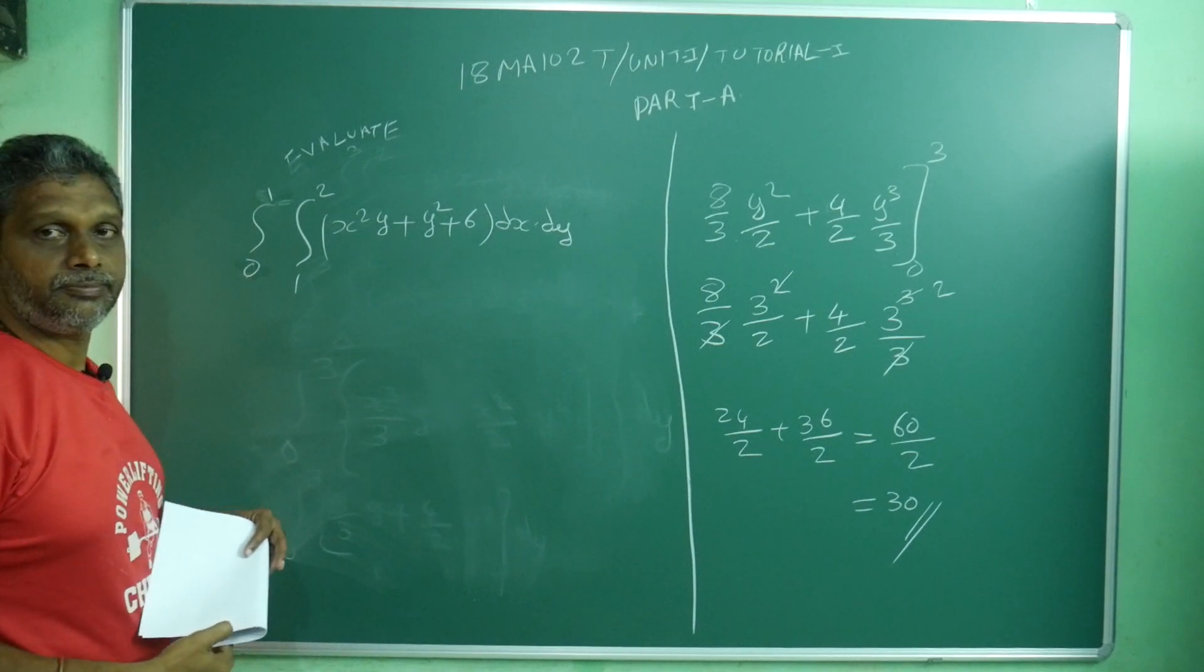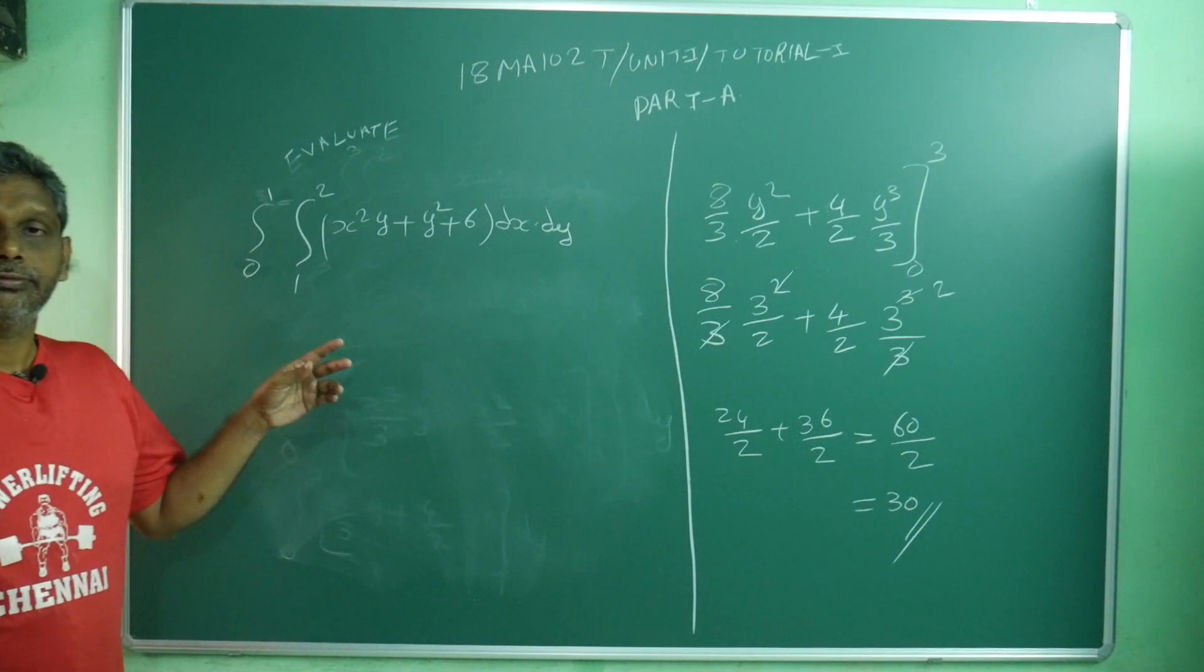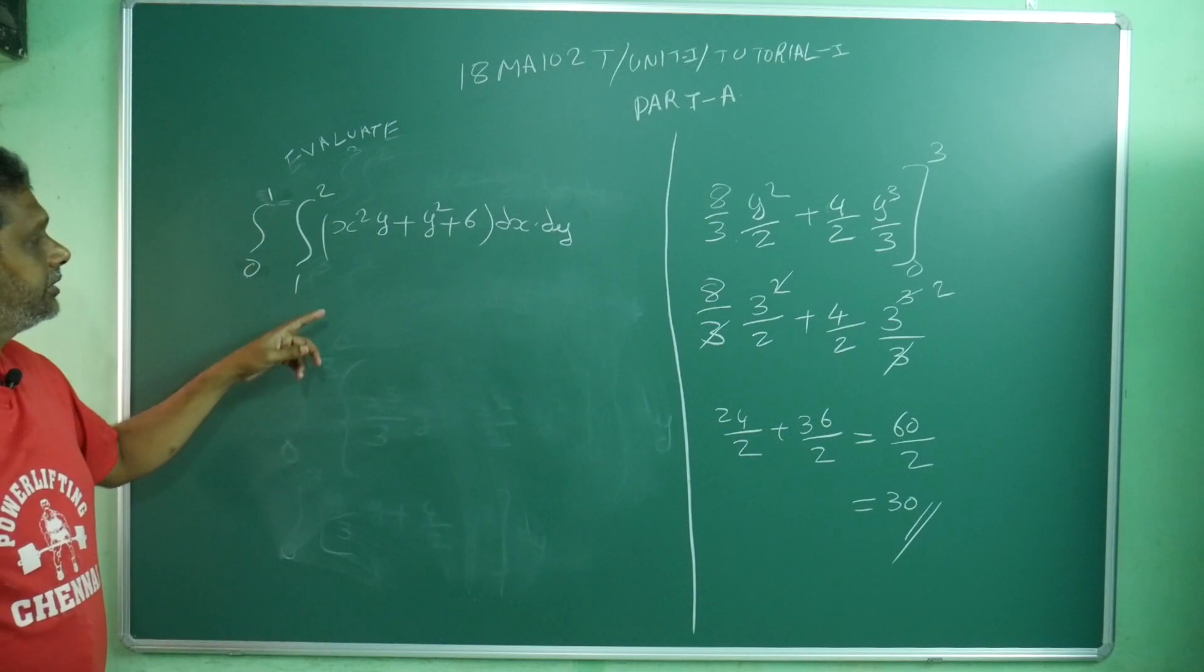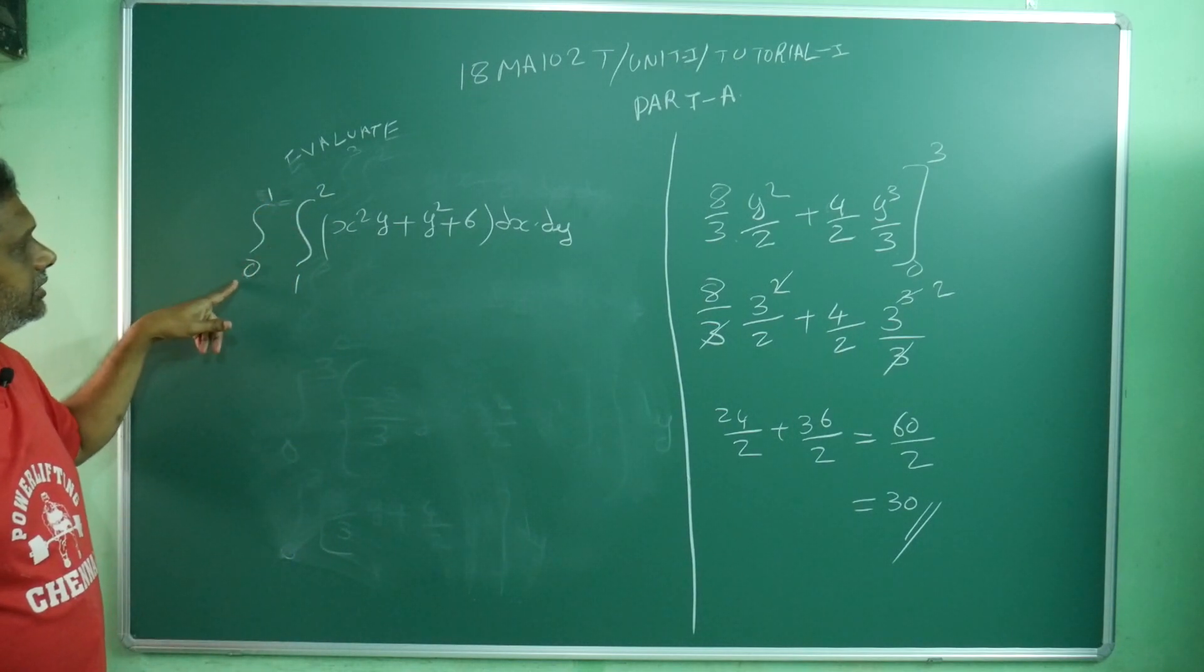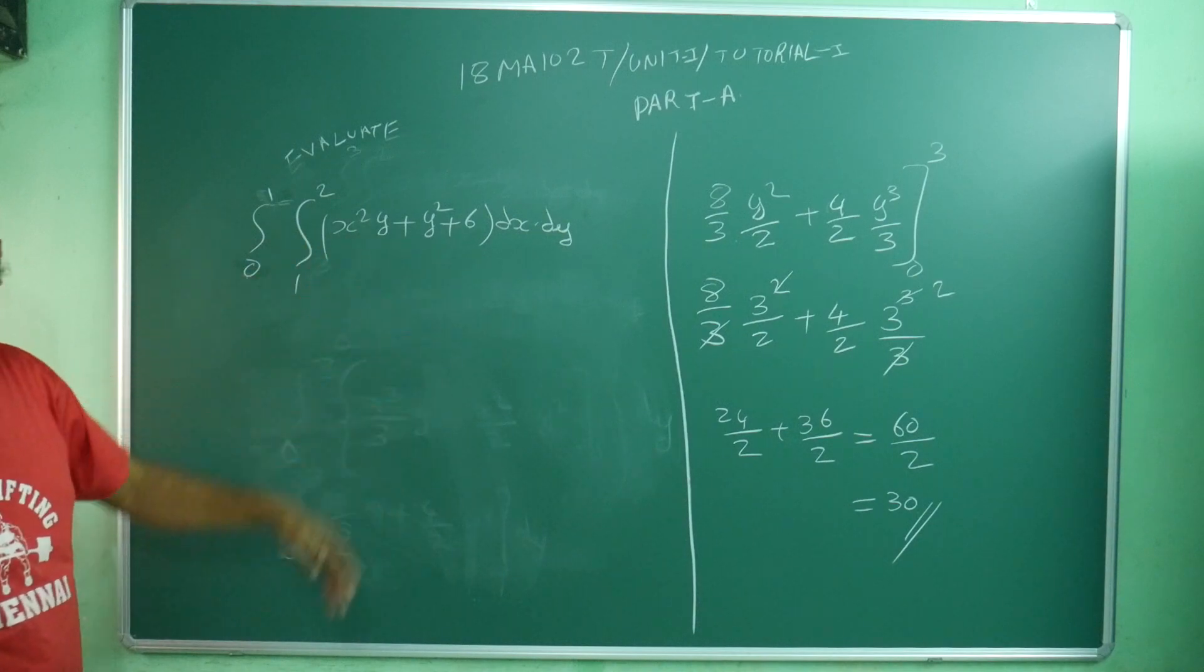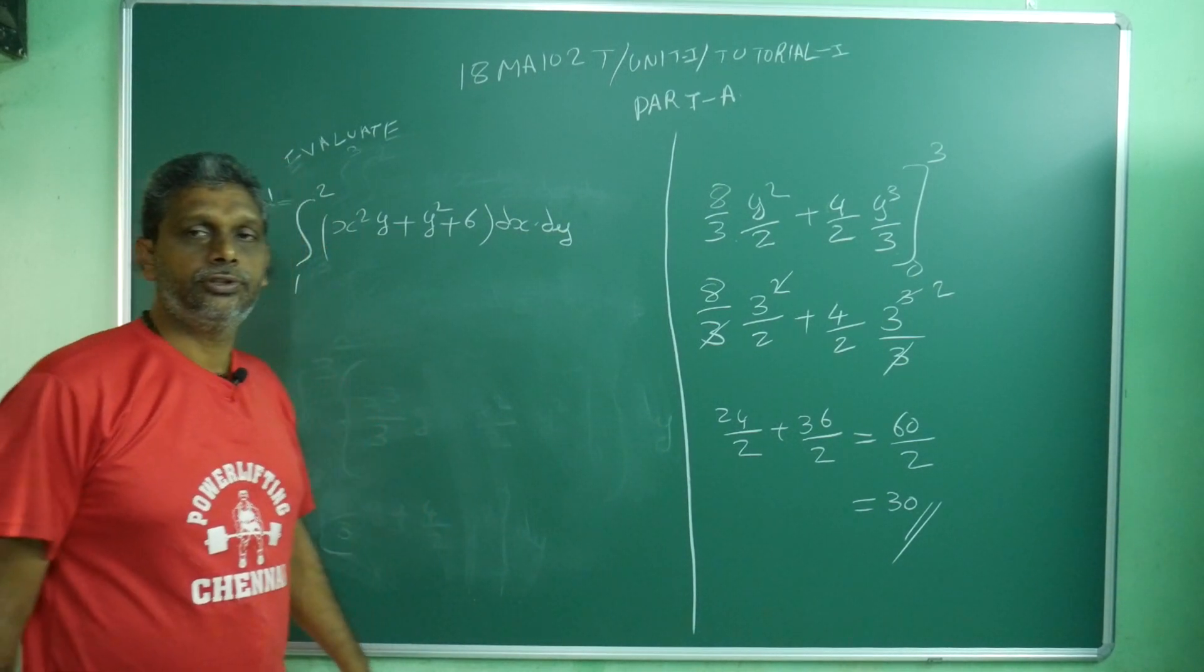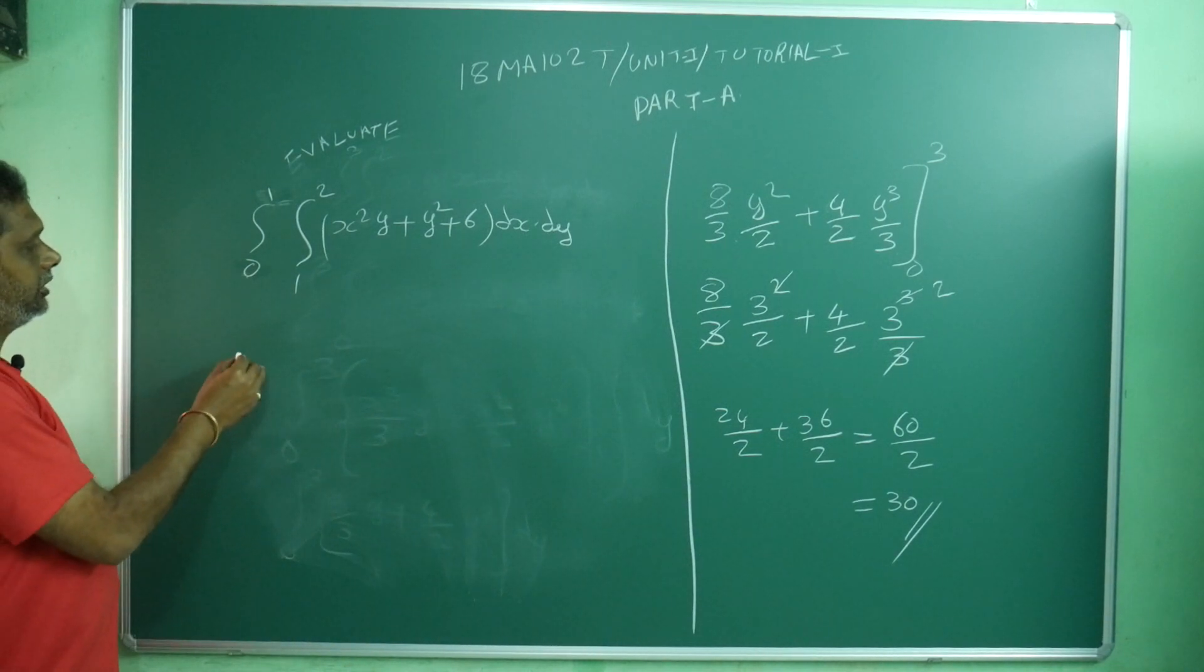This problem also, no problem, same story. Limits are constant. Internal limits are 1 to 2, external limit 0 to 2, dx dy. So you can take in for granted, first with respect to x you can do. With respect to x, if you do, what will you get?